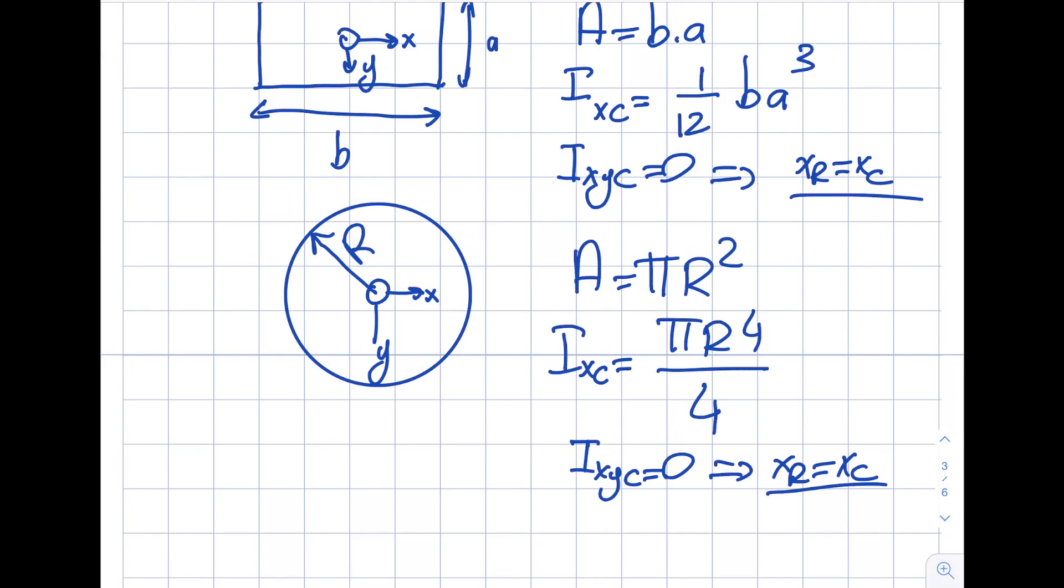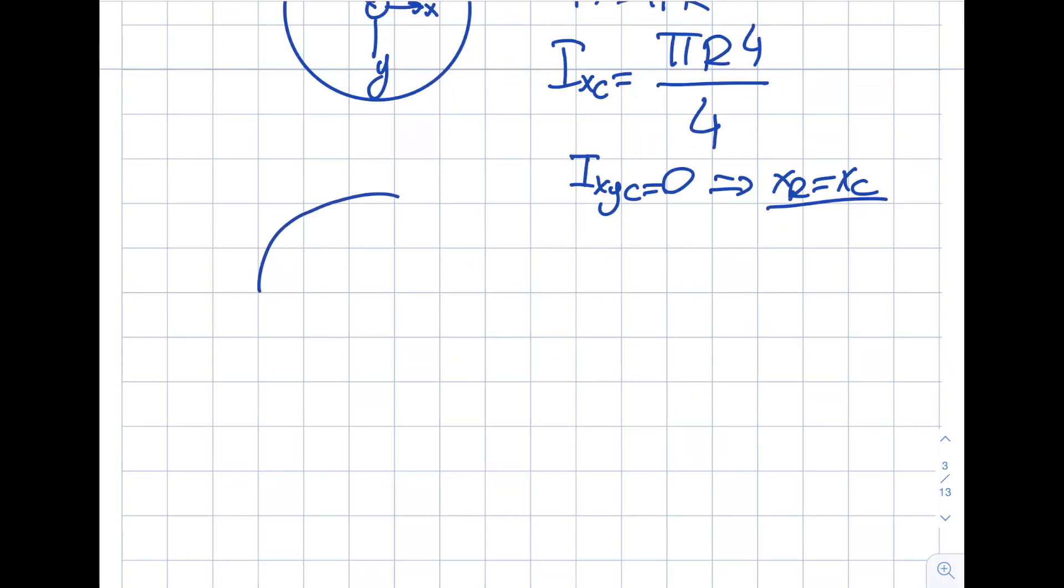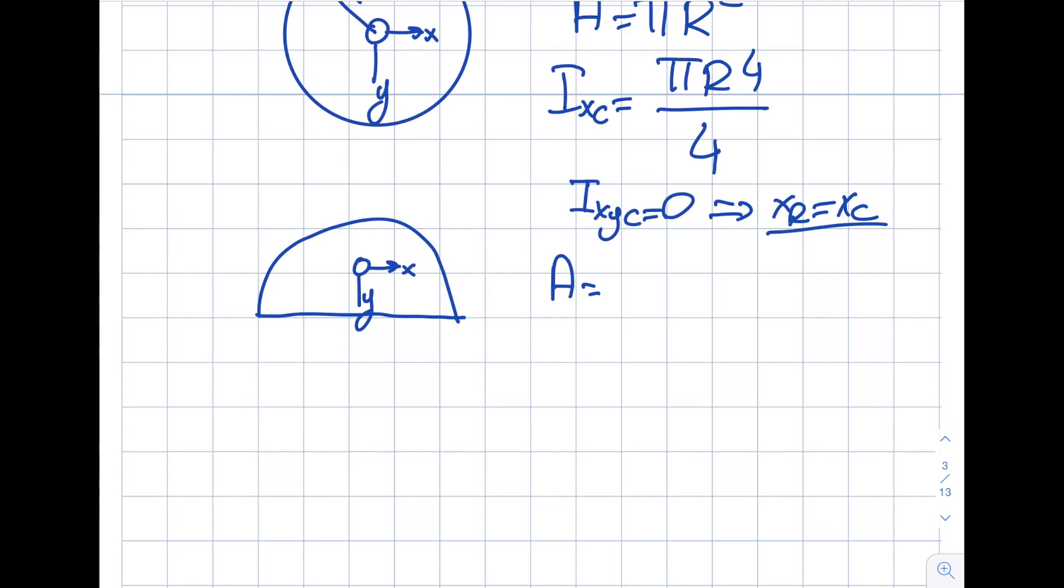There will be a semicircle. I have something like this, and I still have the same directions: this is X, this is Y. You know the area already. Area will be half of the full circle. IXC will be 0.11 approximately R to the power of four. Let's take a look at the symmetry. Do I have symmetry in the top half and bottom half? No. I better have it in the Y direction. If I have it, do I have symmetry right and left? Oh yeah, that's good. So I will get IXYC equal to zero, therefore XR equals XC, just like the previous case.